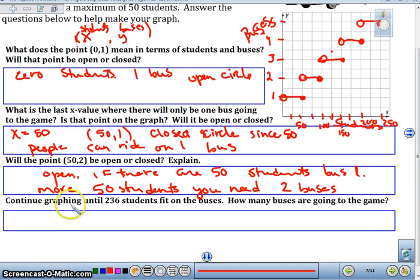So, if we're continuing that, it says, okay, if we continue graphing until 236 students fit on the bus, how many buses are we going to need? If you take a look at that, what you might be thinking is, we're going to take 236, and we divide it by 50, and we should have five buses. How many buses was that going to get us to the game? We would need five for all those students.